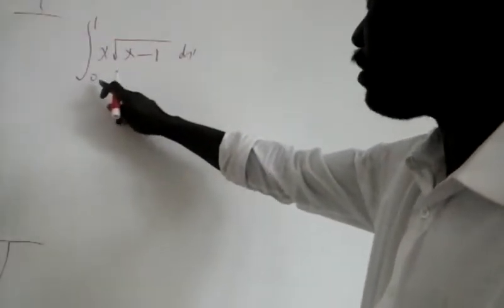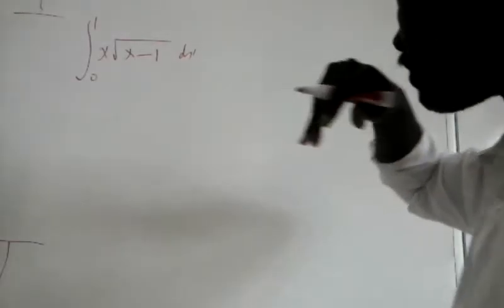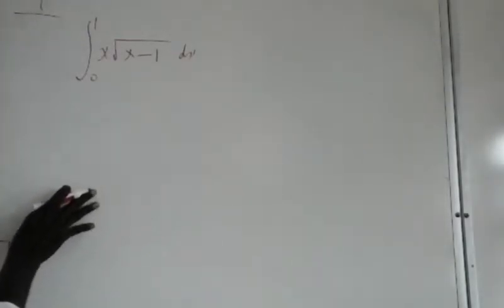And it states here the integral of x into root of x minus 1 dx, and the limits given here are 0 and 1. So we are going to find a solution for the integral of x into the square root of x minus 1 dx.